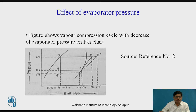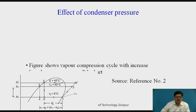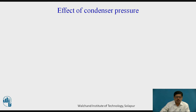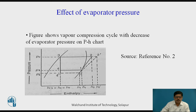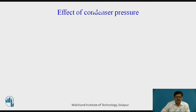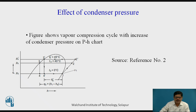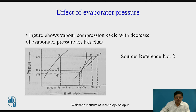Now let us see the effect of evaporator pressure. If the initial evaporator pressure is Ps and it decreases to Ps dash, then the simple vapor compression cycle is 1, 2, 3, 4, and with reduced evaporator pressure it will be 4 dash, 1 dash, 2 dash, 3, 4 dash. When the evaporator pressure decreases, the refrigerating effect will decrease, work of compression will increase, and therefore the COP of the cycle will always be reduced.